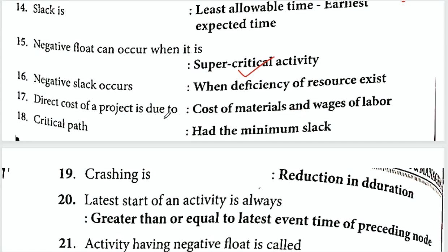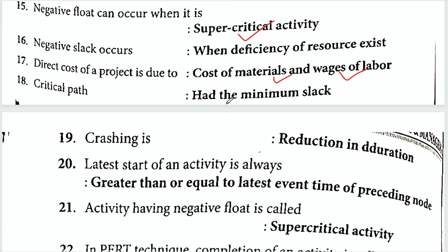The direct cost of a project is due to cost of material and wages of labor. The activity having minimum slack is on the critical path. Crashing refers to reduction in project duration by adding extra machinery or resources.